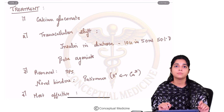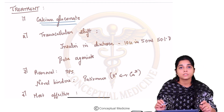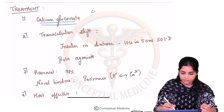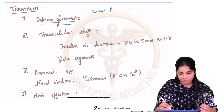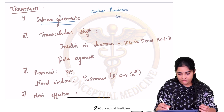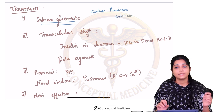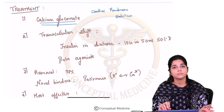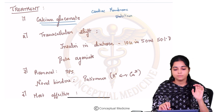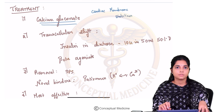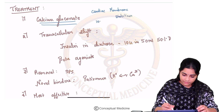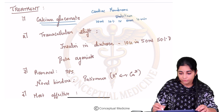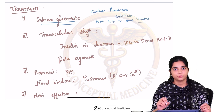Now the treatment of hyperkalemia. The first drug to use is calcium gluconate, which is a cardiac membrane stabilizer. It does not affect the potassium level itself; rather, it makes the cardiac membrane stable enough to prevent arrhythmias. It is given as 10 ml of 10% calcium gluconate IV over 10 to 15 minutes as a slow IV infusion.